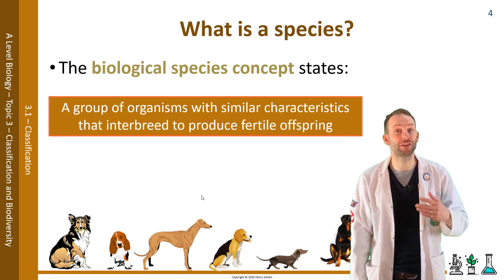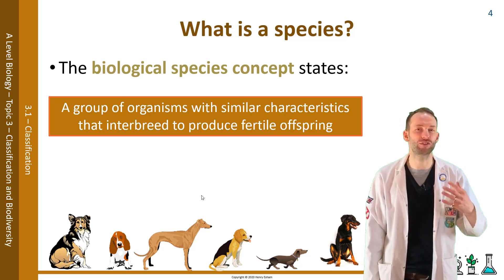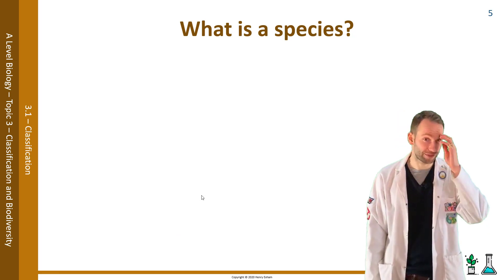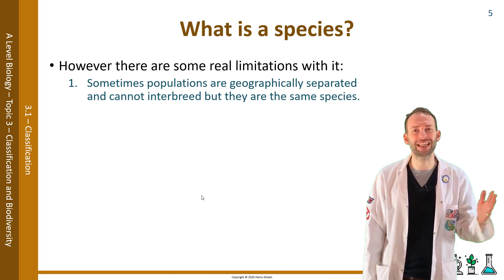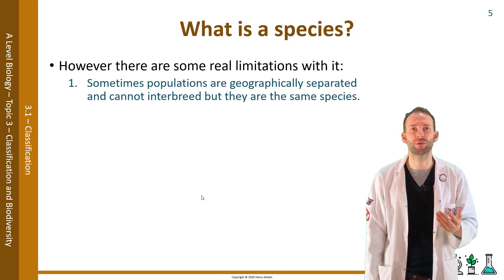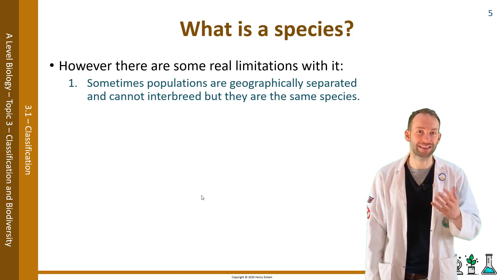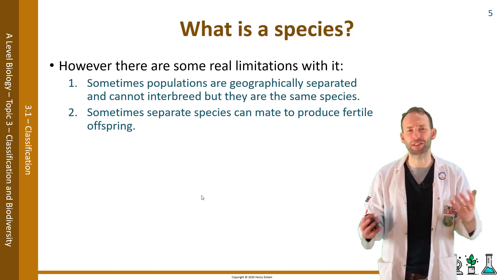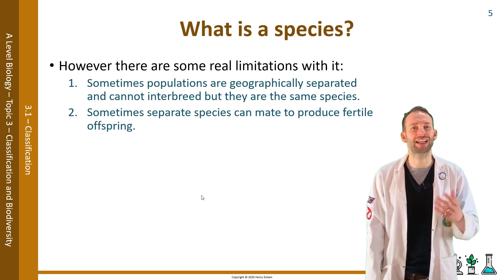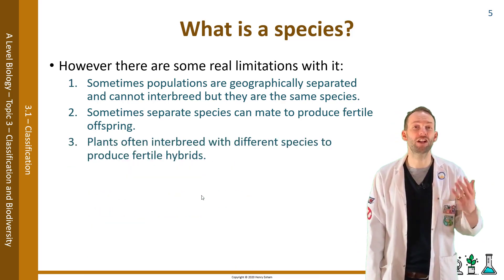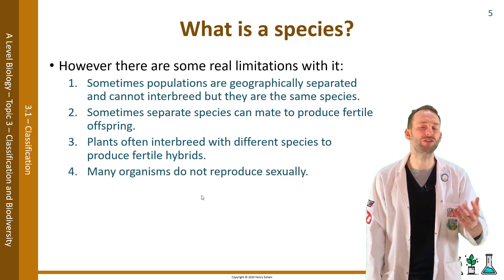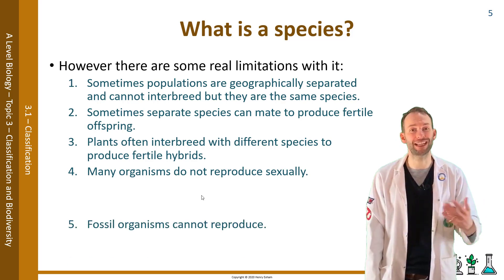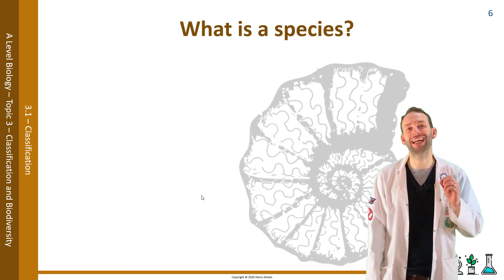In many cases this way of defining a species works really well - it's certainly better than the way Linnaeus came up with it, which was just looking at physical features. But there are some limitations. Sometimes populations are geographically separated and cannot interbreed but are the same species. Sometimes separate species can mate to produce fertile offspring. Plants often interbreed with different species to produce fertile hybrids. Many organisms do not reproduce sexually at all, and fossil organisms can't reproduce either.